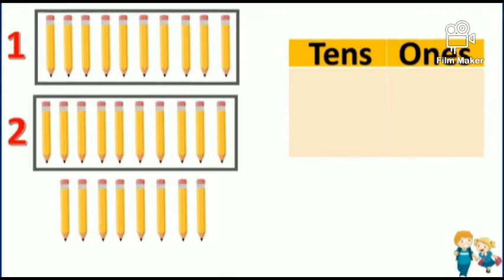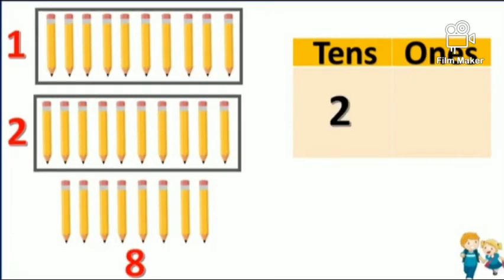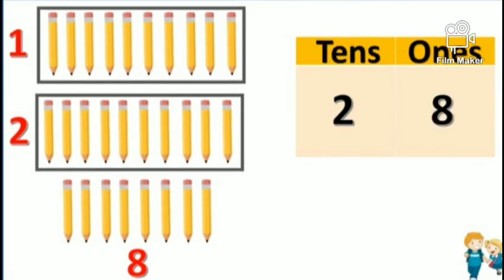Now count the remaining pencils: one, two, three, four, five, six, seven, eight. So, eight ones. Now we have two tens and eight ones. The number is two-eight: twenty-eight.